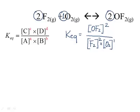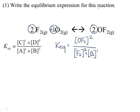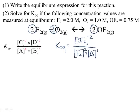Let's do this in more detail by solving the equilibrium constant. We're given the following concentration values measured at equilibrium: F2 is 2.0 molar, O2 is 1.0 molar, and OF2 is 0.75 molar. Notice that the concentrations are measured in molarity — the only unit we tend to use for these calculations. To solve, I simply plug these numbers in and work through the math.